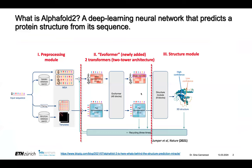So what is AlphaFold2? It's a deep learning neural network that predicts a protein structure from its sequence. The neural network has three parts. It's a big complicated system, but we can think of it as a black box where you input a sequence and the output is a protein structure. I'll go into a little more detail in the middle.